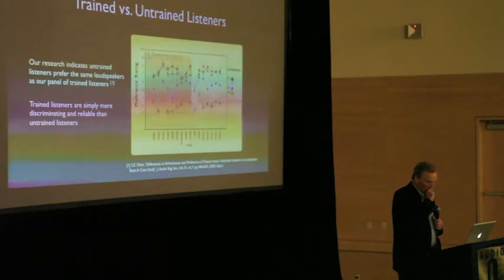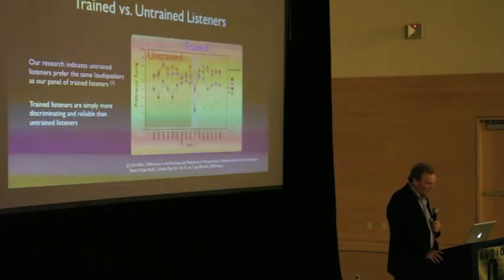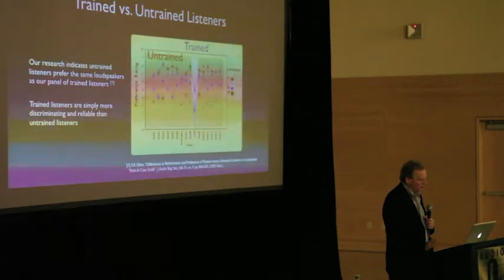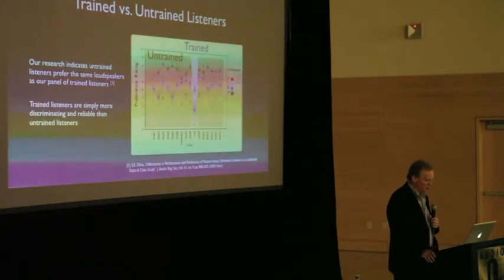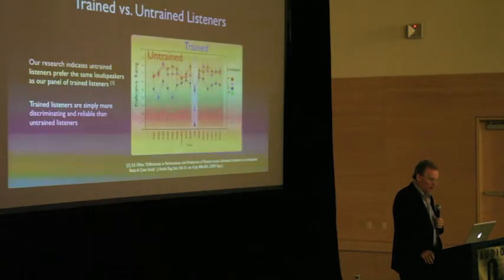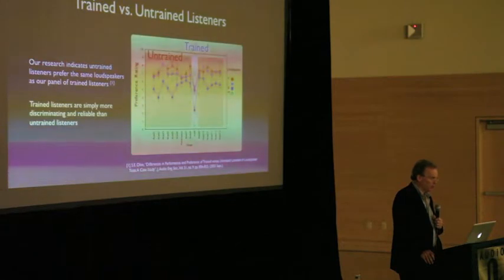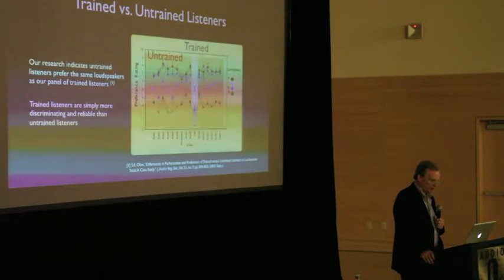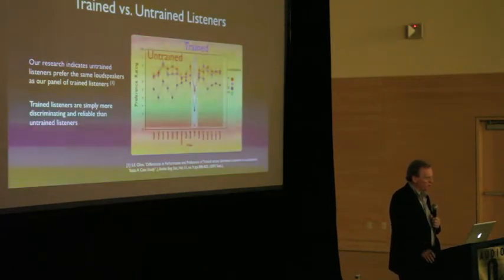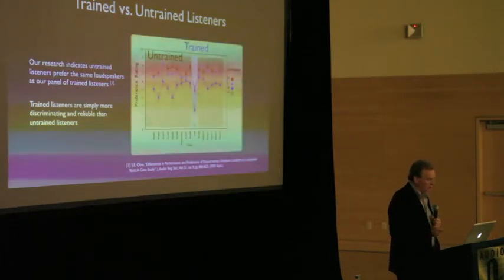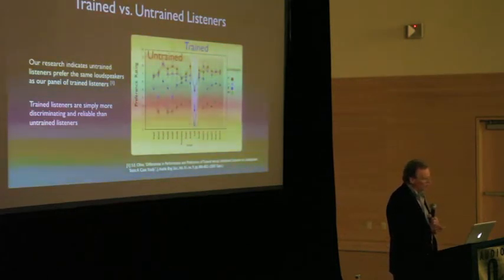But it's always nice to have some data. So, in 2003, we did a pretty extensive test where we brought in over 300 listeners from outside Harman. And they all went through a double-blind test where they compared four loudspeakers. And we asked them to rate them on a scale from 0 to 10. And what we found was that these different groups of untrained listeners essentially rank-ordered these speakers in the same order as the trained listeners. The only difference was that they tended to rate things higher on the scale than the trained listeners. And as an individual and as a group, they were much more variable in their ratings.